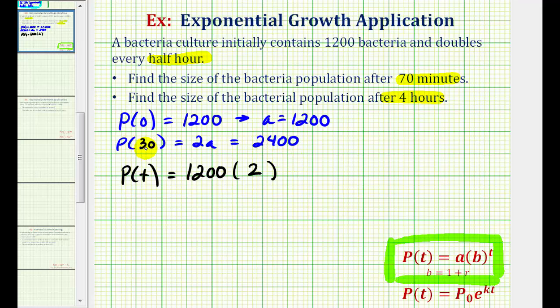Since P of 30 must equal 2,400, when t is 30, we want to multiply by one factor of two. So the exponent must equal one when t is 30, which means the exponent must be t divided by 30. Again, notice when t is 30, we would have 1,200 times two to the first power, or times two, which would give us 2,400.